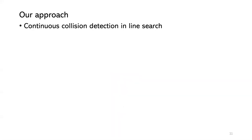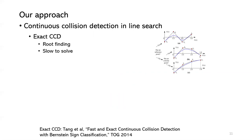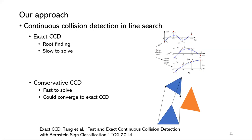For continuous collision detection in line search: previous methods always used exact CCD, which is a root-finding problem. As the right picture shows, it needs to consider many conditions and do a lot of exact computation, so it's slow to solve. We propose a conservative CCD method. As the bottom figure shows, we only consider the convex combination of the motion, like the blue triangle, and check if it has collision with the obstacle — the brown triangle. It's conservative but fast to solve, and we also prove that this conservative CCD converges to the exact CCD.